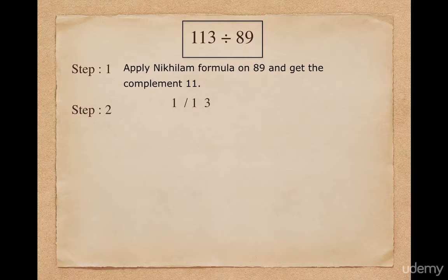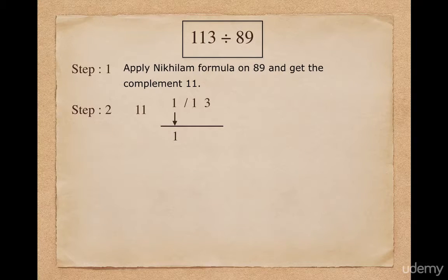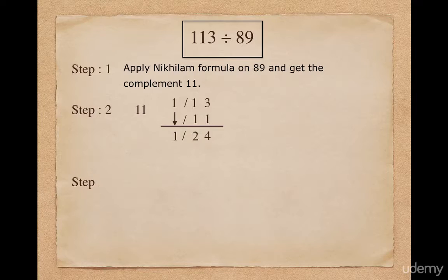As the next step, split the dividend into quotient and remainder. The remainder part will have the same number of digits as the divisor, so I put 13 in the remainder part. To get the answer, put the first digit 1 as it is. Multiply 1 with the individual digits of 11 (the complement), giving 1 and 1. Add all digits of the second column to get 2, and all digits of the third column to get 4. So the quotient is 1 and the remainder is 24.